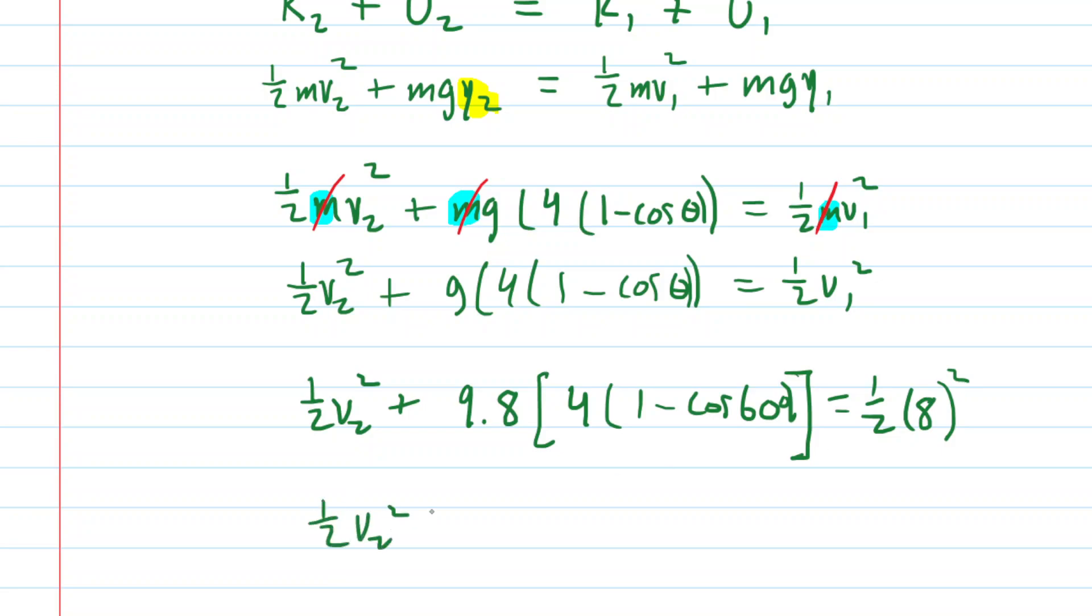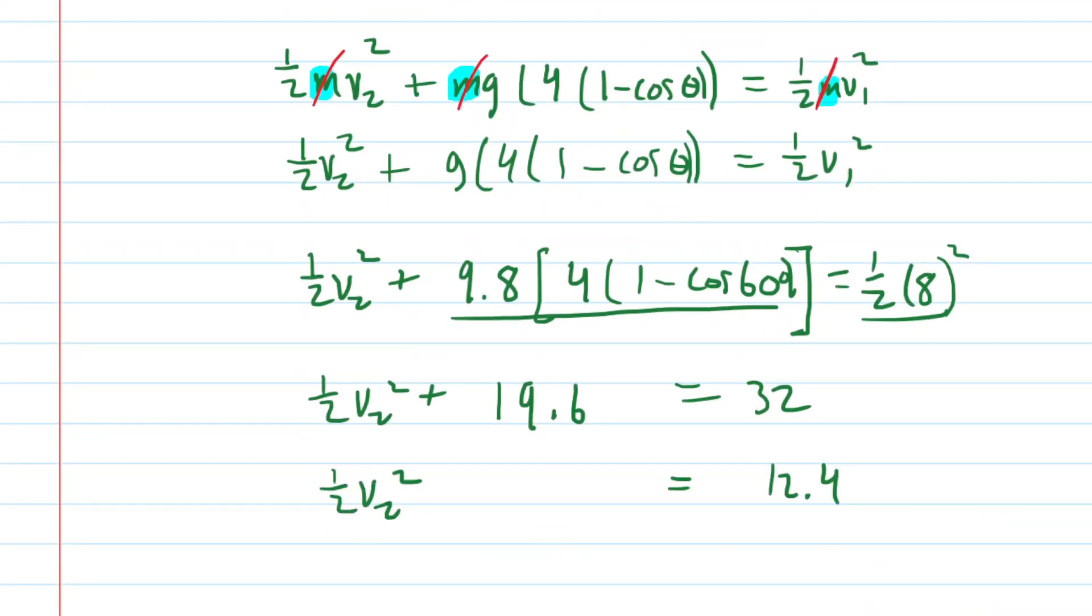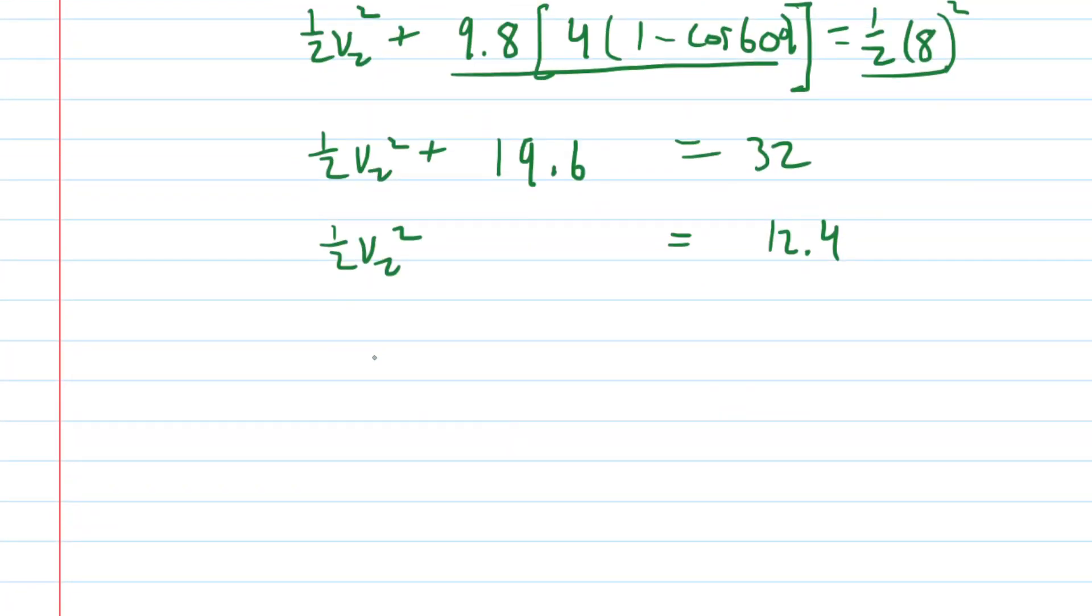Now, let's pick up our calculators. And let's simplify this term and this term. Make sure the calculator is set to degree mode. So, that calculated first term is 19.6. The other side is 32. Let's subtract 19.6 from both sides. And when we do that, we get 12.4. Then multiply both sides by 2. You'll get 24.8 on that side. And then finally, take the square root of both sides. And here's your answer to part A. We can see that the speed of the bob at position 2 is approximately 4.98 meters per second. So, that's the correct answer for part A.